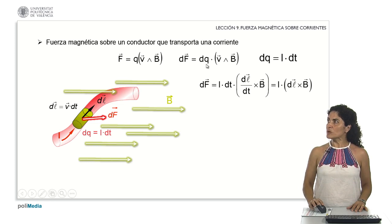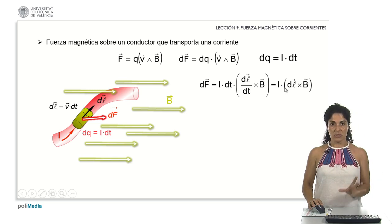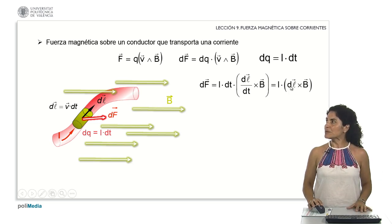The force differential, taking into account the charge differential as defined from the current and time, and that the speed can always be expressed as a function of space per unit of time, we have that the time differentials can be simplified and we are left with expression to analyze the magnetic force differential. It will be defined by the scalar product of the current by the result of the vector product of multiplying the differential line element of length by the magnetic field vector.